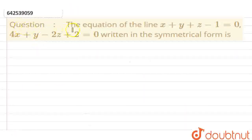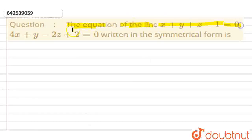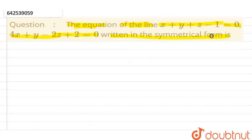Hello students, today's question is: the equation of line x plus y plus z minus 1 is equal to 0, and 4x plus y minus 2z plus 2 is equal to 0, written in a symmetrical form is?